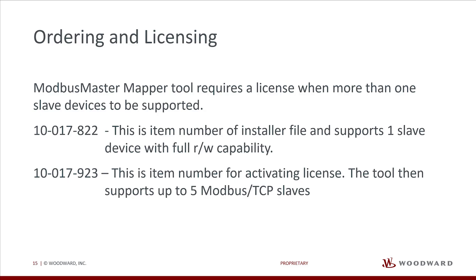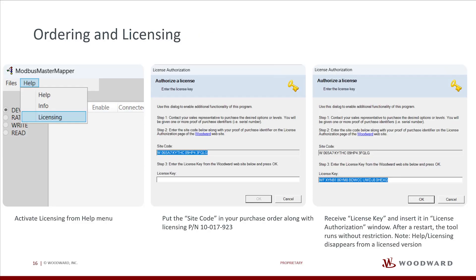If you want to read out more than one slave, you need a licensed version of the Modbus Master Mapper. You can order item number 10017923 to get a licensed tool. The licensed version will support up to five slave devices. When you receive the license number for your software, you can enter the license key in the help drop-down menu.